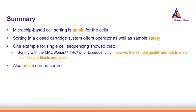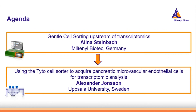To summarize: microchip-based cell sorting is gentle for the cells, and sorting in a closed cartridge system offers operator and sample safety. One example for single-cell sequencing showed that sorting with the Tyto prior to sequencing can improve sample quality and reads while minimizing artifacts and costs. Sorting of nuclei is also possible on the MACSQuant Tyto. With this, I want to thank you for your attention and hand over to Alexander.